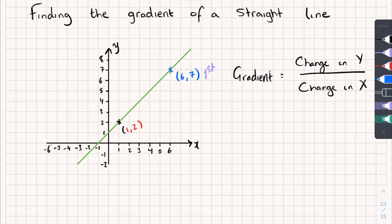And so I'm going to do 7, so the gradient is going to be equal to 7 subtract the 2 from over here. And because I picked this coordinate as my first one, the one that the arrow is pointing to, when I subtract my x values, I need to pick the 6 first, and then I'm going to subtract the 1 from over here. So 6 subtract 1.